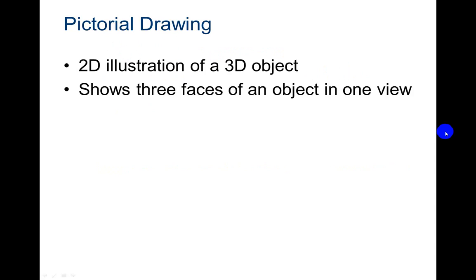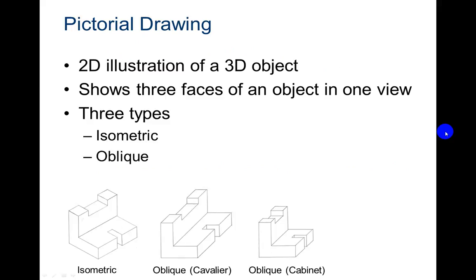So what is a pictorial drawing? It's a 2D illustration of a 3D object. It shows three faces of an object in one view. There's three different types: the isometric, the oblique, and the perspective.